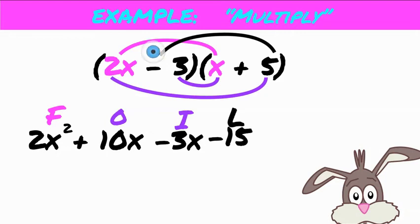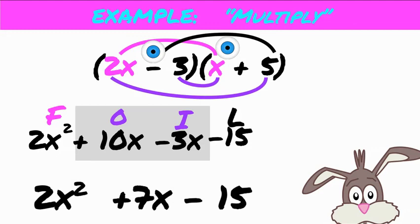But right in the middle, I have foil man up there when I put some eyes on there, right in the middle in this gray box. I notice that I have what's called like terms. I have 10x's, and I'm removing 3x's, which gives me 7x's. So we're going to combine those two, the O and the I, and get 2x squared plus O and I combined makes 7x minus 15.